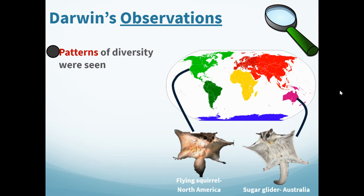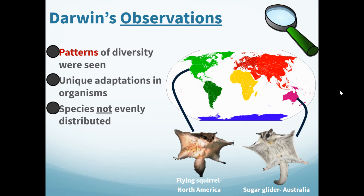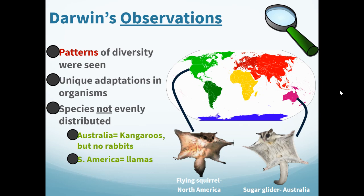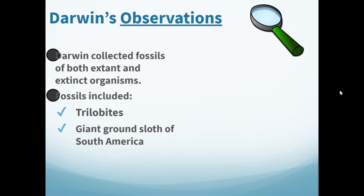Darwin observed patterns of diversity depending on where organisms were located, which was unique to the adaptations found in organisms. Species were not evenly distributed around the globe — Australia tends to have kangaroos but no rabbits, and South America tends to have llamas. Darwin also collected fossils of both extant and extinct organisms to compare and create theories about why some organisms survive and reproduce while others go extinct.